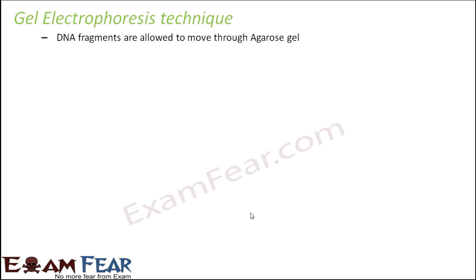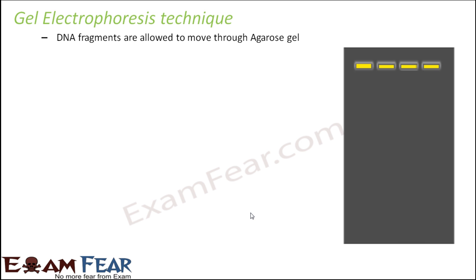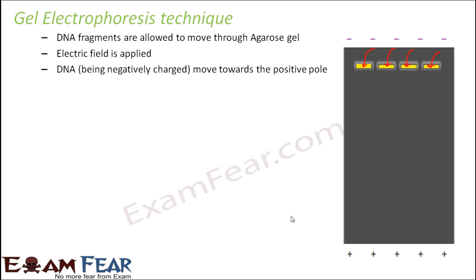The DNA fragments are allowed to move through the agarose gel, which is a semi-liquid substance. The DNA sample is put into the wells and then an electric field is applied. The DNA molecules are negatively charged because DNA contains the phosphate group — phosphate is PO4 3-minus — so it has many phosphate groups. This negatively charged DNA is attracted towards the positive side, so the DNA fragments start moving towards the positive pole.